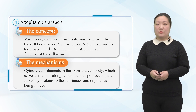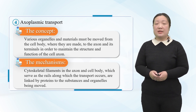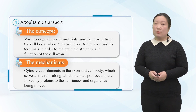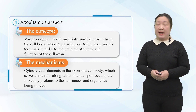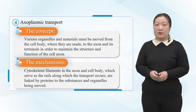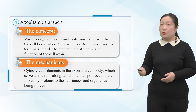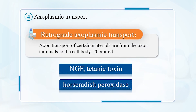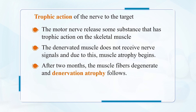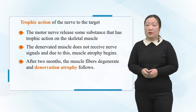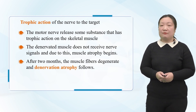Axoplasmic transport originates from the cell body, where materials are synthesized and must be transported from the cell body to the axons and their terminals in order to maintain the structures and functions of those structures. Regarding the trophic actions of the nerve on the target, the motor nerves release substances that have a close relationship with trophic actions on skeletal muscles. The denervated muscles do not receive nerve signals, and due to this, muscle atrophy begins, and after two months, the muscle fibers degenerate and denervation atrophy follows.